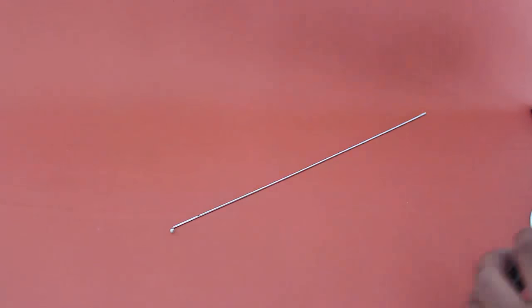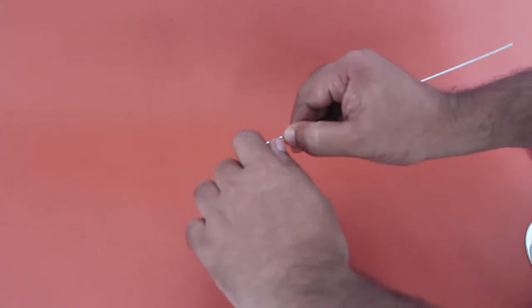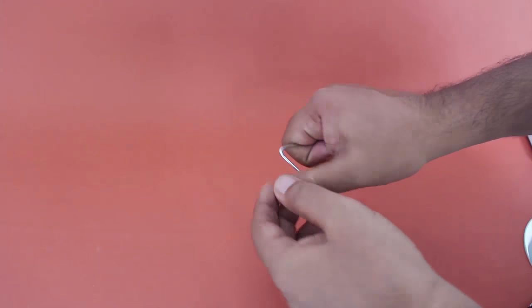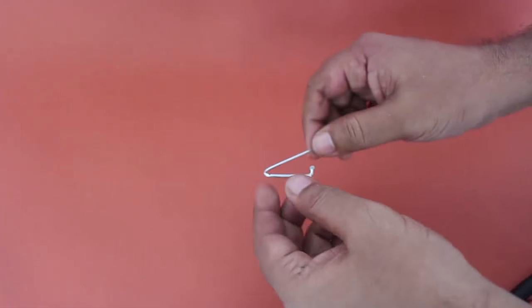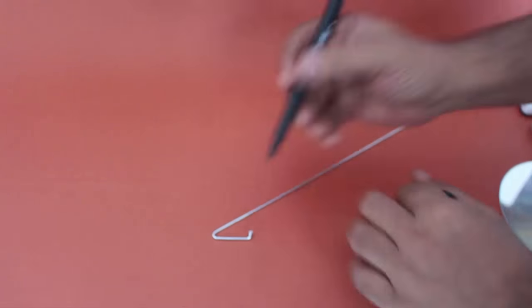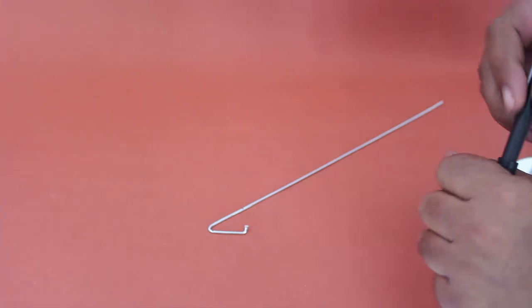First, make a V-shaped bend one finger in length on the spoke. If you have a problem bending it, use a plier. Then from the V-shaped ends, bend the spoke perpendicular to the bend.